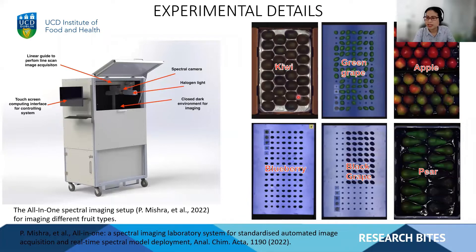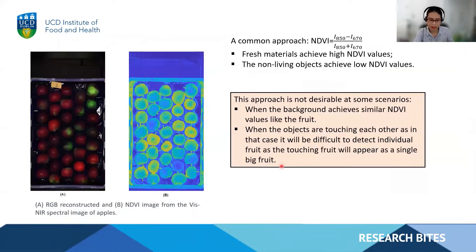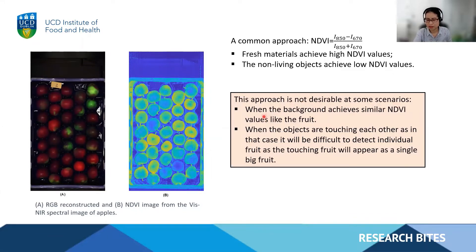In this study, we include six different types of fruits and image them with their original packaging as a complex background, which is intentional. Traditionally, if we want to identify apples from the background, we use NDVI values, since fresh materials achieve high NDVI values while non-living objects achieve low values. But this approach is sometimes not desirable. For example, if the background achieves similar NDVI values to the fruit, as we see here, crates also show high values like the apple, making it very hard to separate apples from crates.